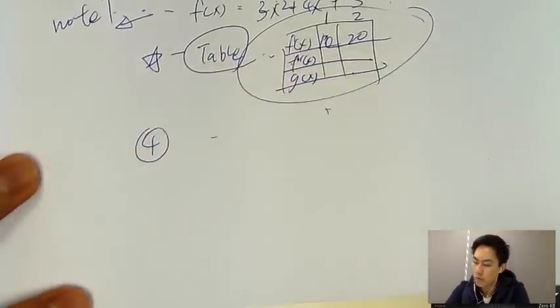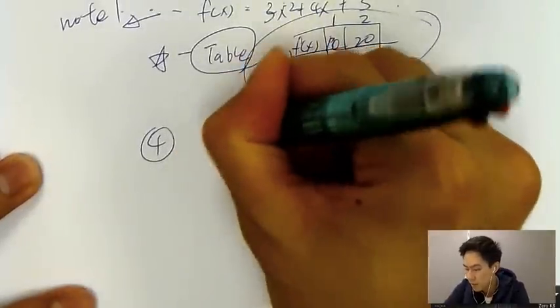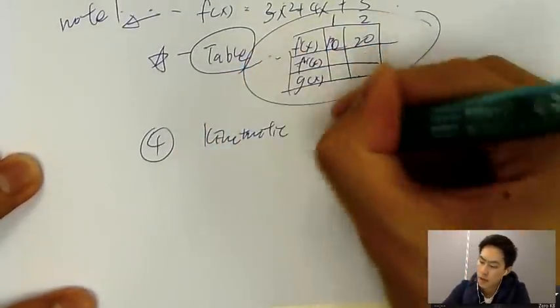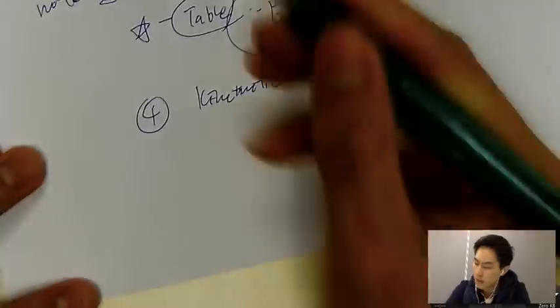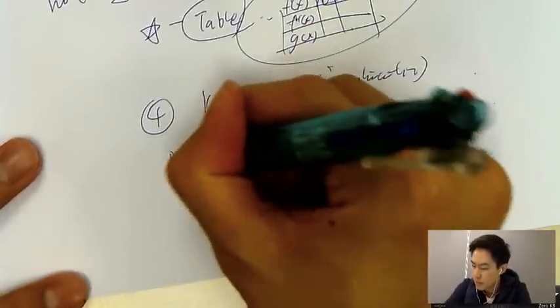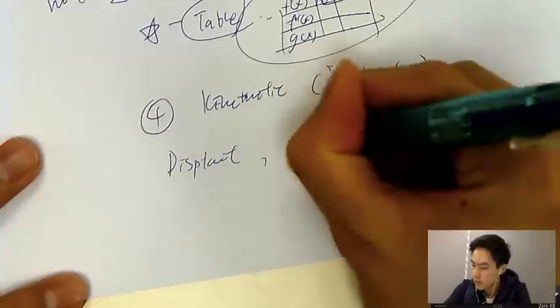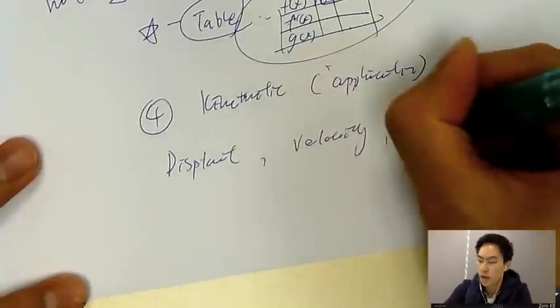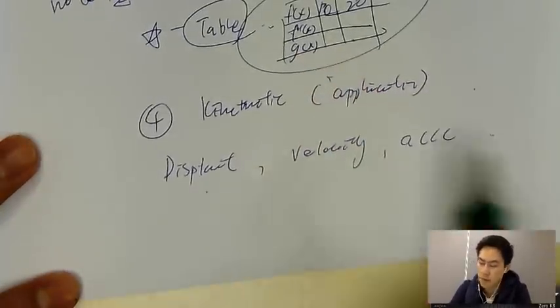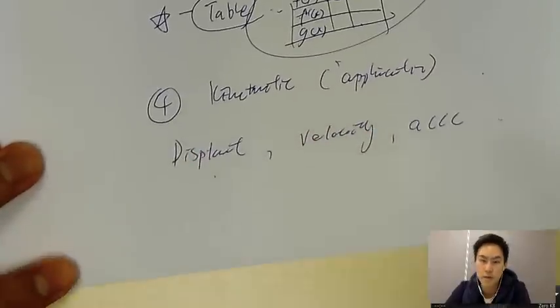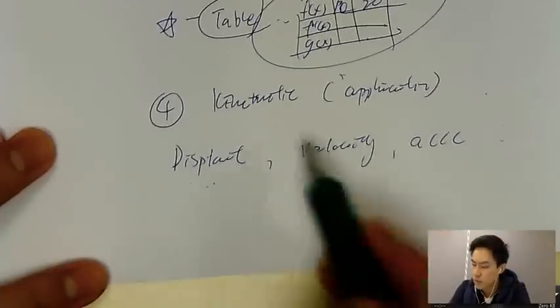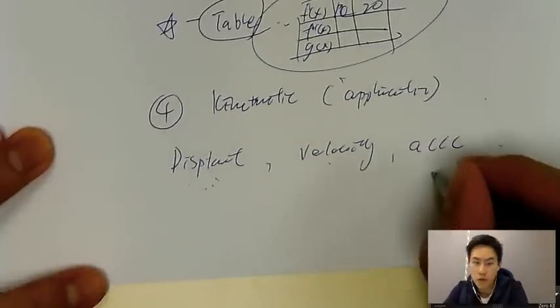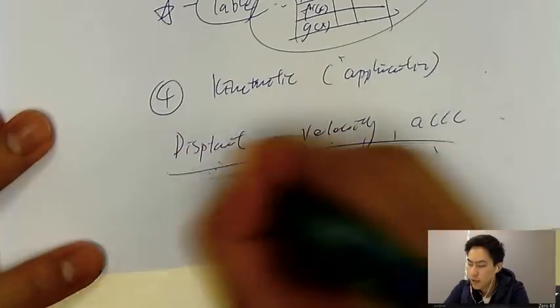And then for the fourth question type, that will be kinematics. This is more like application questions. Kinematic, this word, what does it mean? It's actually just all about displacement, velocity, and also acceleration. It's actually very easy, the concept. You need to know the relationship between displacement, velocity, acceleration in differentiation. This usually will be like a long question.